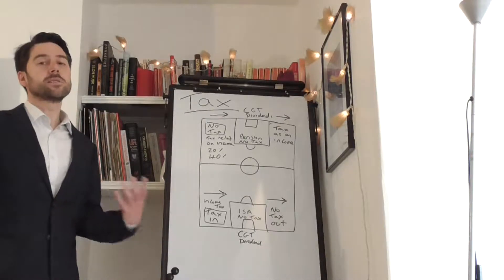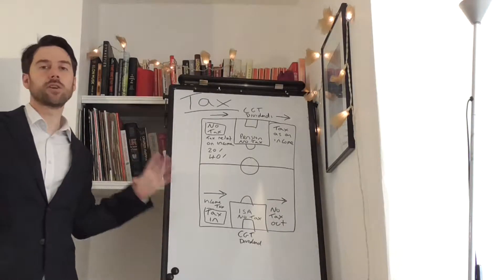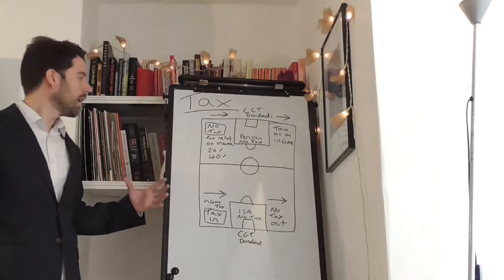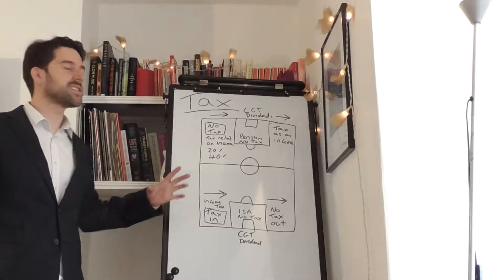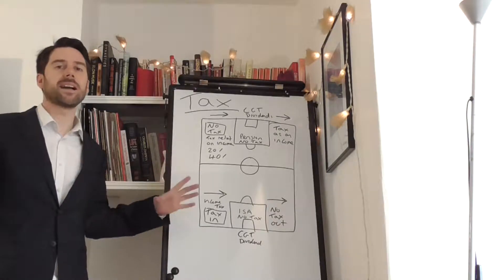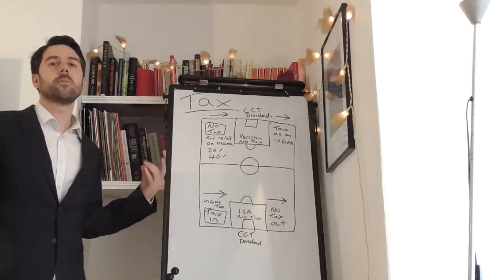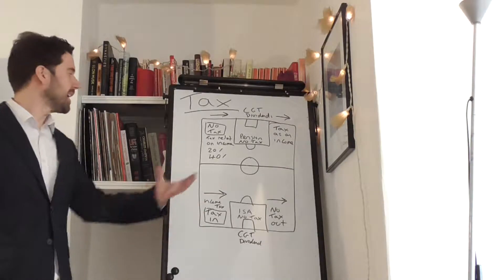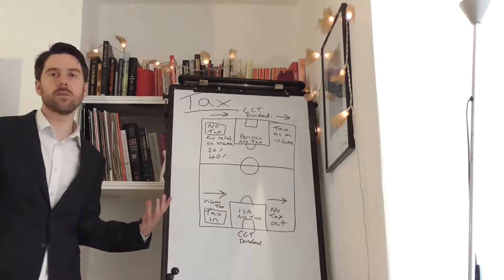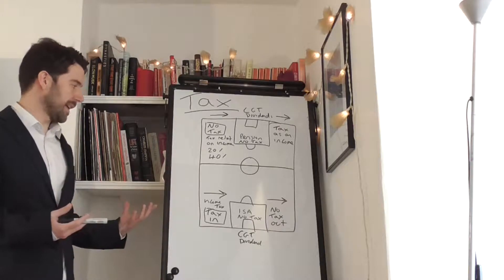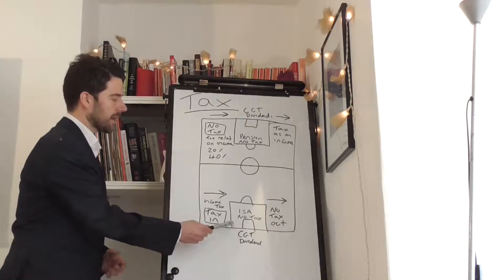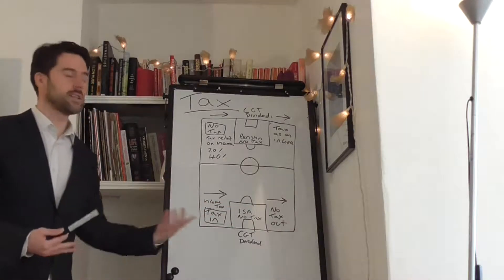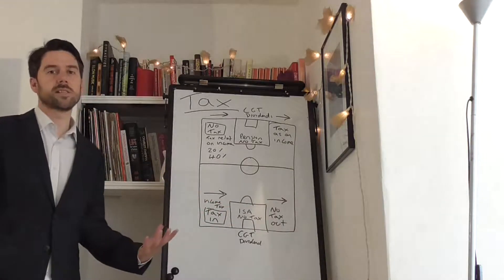Tax incentives are a good thing. What I've come up with is using a football formation asset allocation. I've used the most simplistic way I can explain what a pension is and what an ISA is by using a football pitch.